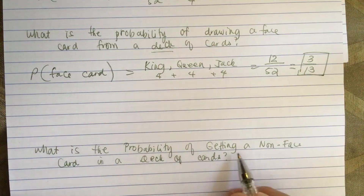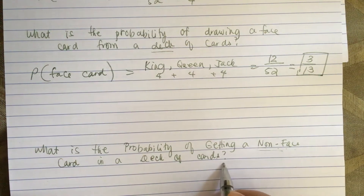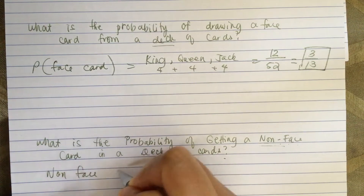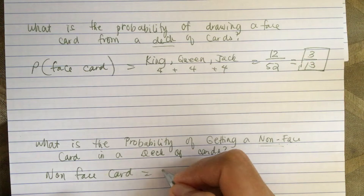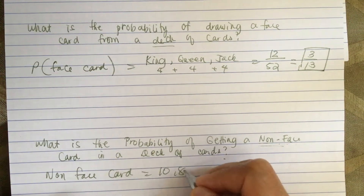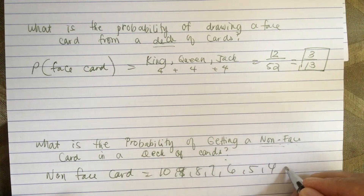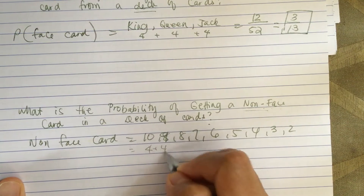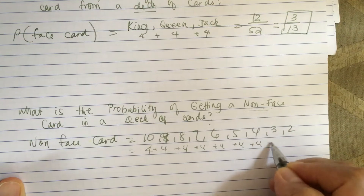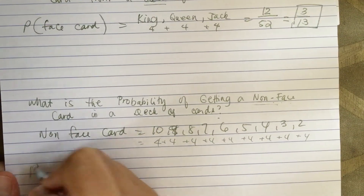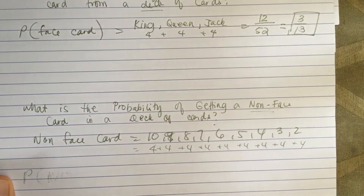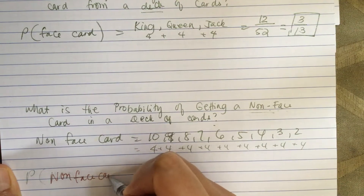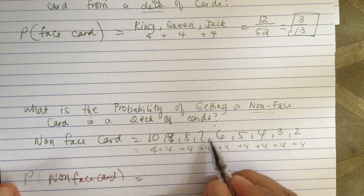What is the probability of getting a non-face card in a deck of cards? The non-face cards are 9, 8, 7, 6, 5, 4, 3, 2, and there are four of each. So 4 plus 4 plus 4 plus 4 plus 4 plus 4 plus 4 plus 4 equals 40, because there are 10 non-face card ranks.